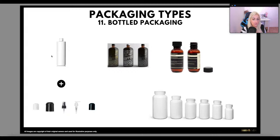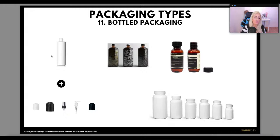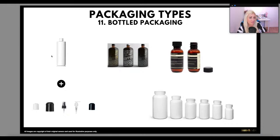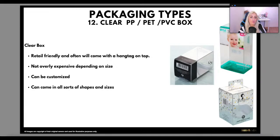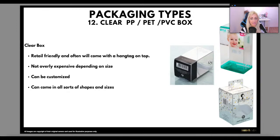Next type of packaging is bottled packaging. Usually bottled packaging is when you've got some sort of pills or liquid. Bottle packaging can come in plastic, glass, or metal — many different types of materials. It can also have a different type of lid — sometimes a spray-type top, sometimes one that pops open, sometimes it needs to be unscrewed. And then the last example is having a clear PP, PET, or PVC box — basically a clear box where it's clear all the way around. They're very retail friendly and often will come with a hang top. They're not overly expensive, can be customized — you can print on them, put stickers on them — and can come in all sorts of shapes and sizes.